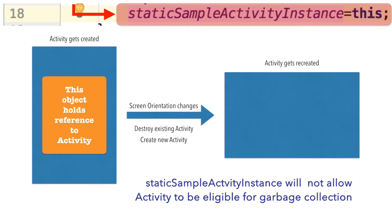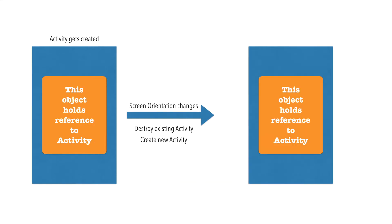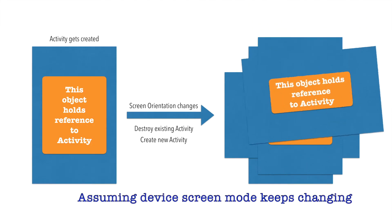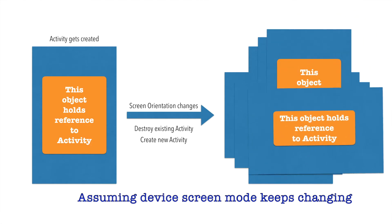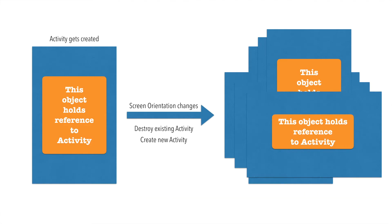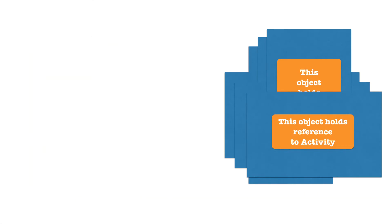If an object is being referenced by any other object, it cannot be destroyed — that is how the whole garbage collection of Java works. So what actually happens is the old existing activity with the object instance remains, and a new activity with portrait mode gets created and displayed. As this continues, you will see that more and more instances of the activities are getting created and older instances are still being retained in memory of the application.